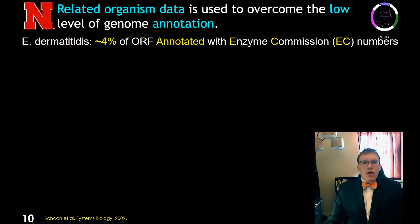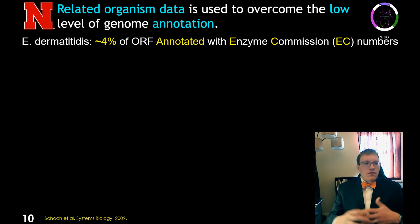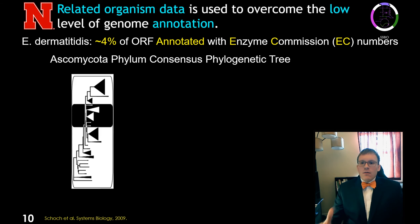When we applied this workflow to Exophiala, we noticed that only about 4% of open reading frames were annotated with enzyme commission numbers. Enzyme commission, or EC numbers, are very useful tools for relating gene, protein, and reaction. Because we were lacking a lot of information, we decided to look at phylogenetically similar melanized fungi to fill in our knowledge gaps due to this low level of annotation.